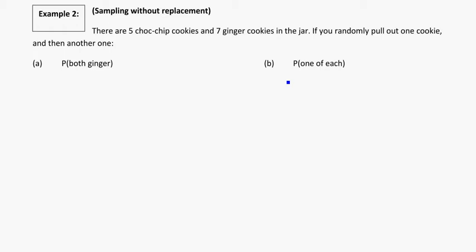This is example two with probability trees, looking at how to do probability trees when we're sampling without replacement, so the probability won't be the same the whole way through. We've got five chocolate chip cookies and seven ginger cookies in the jar. If you randomly pull out one cookie and then another, what are the probabilities for getting both ginger cookies, and what's the probability for getting one of each flavor?